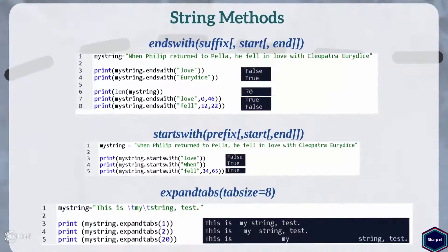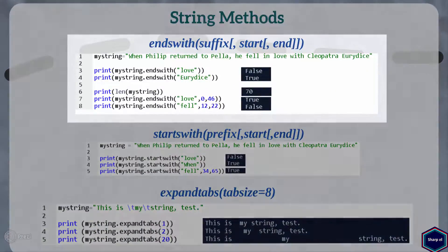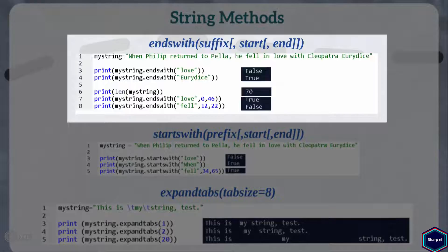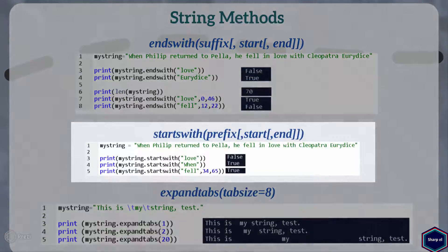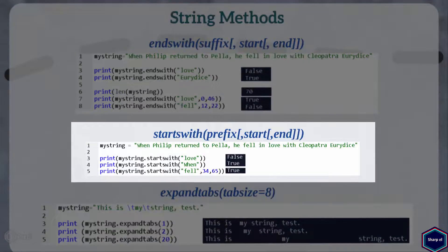Now let's move to next method, endsWith. This method returns true if the string ends with the given suffix. Otherwise, it returns false. Start and end are optional arguments, which are used to limit the search within the string. The startsWith method is very similar to endsWith method, except it checks for the prefix string.